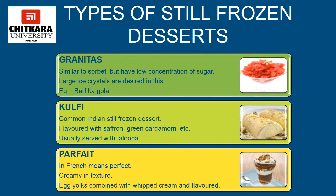Types of still frozen desserts include granita — a coarse, crystalline ice made without egg whites, similar to sorbet but with a lower concentration of sugar, for example baraf ka gola. Then comes kulfi, one of the common Indian still frozen desserts, flavored with saffron and green cardamom, usually served with falooda. Then comes parfait. In North America, parfait usually means an ice cream dessert with layers of ice cream and toppings in a tall thin glass. The original parfait, however, is a still frozen dessert unmolded from a tall thin mold, with a mixture consisting of three elements: a thick sweet egg yolk foam, an equal volume of whipped cream, and flavorings.